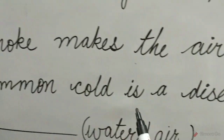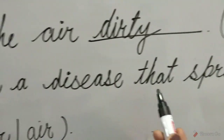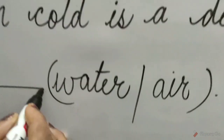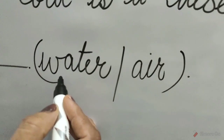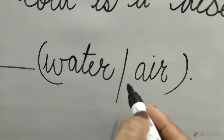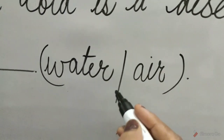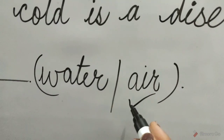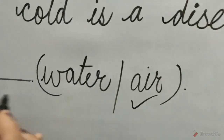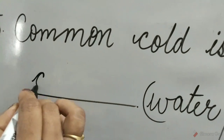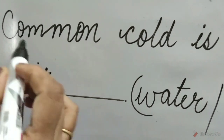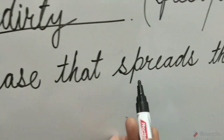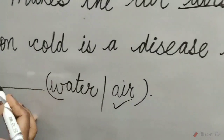Question 5: Common cold is a disease that spreads through dash. Options are water or air. The air option is correct. So we tick on air and write here air. Common cold is a disease that spreads through air.